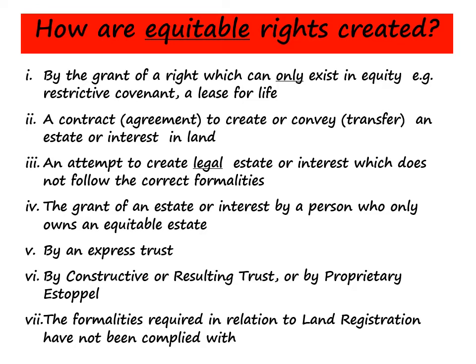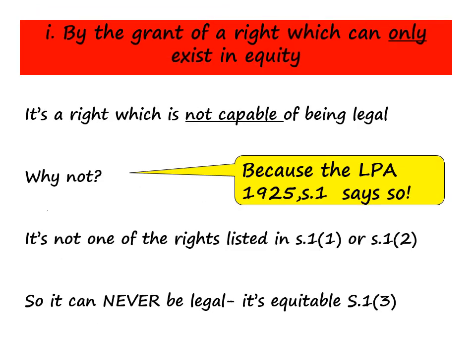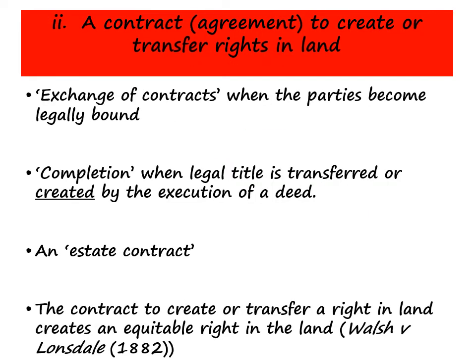Now let's turn our attention to equitable rights to see how they are created. As a general rule, equitable rights are easier to create because they don't require a deed — so there's less formality required. I've listed all the ways in which equitable rights can be created. That list looks a bit scary, but let's break it down and look at each one in turn. The first one is by the grant of a right which can only exist in equity — so we've seen that there are some rights which are not capable of being legal; if it's not listed in Section 1.1 or Section 1.2, then it simply can't be legal.